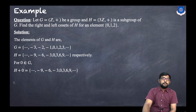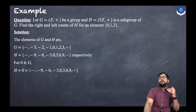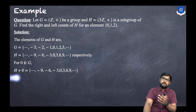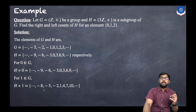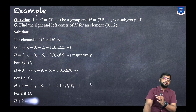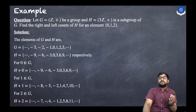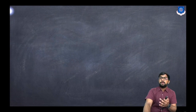For right cosets: H+0 = {…, -9, -6, -3, 0, 3, 6, 9, …} (same as H). H+1 = {…, -8, -5, -2, 1, 4, 7, 10, …}. H+2 = {…, -7, -4, -1, 2, 5, 8, 11, …}. These are the right cosets of H.